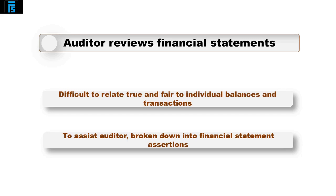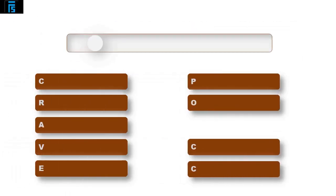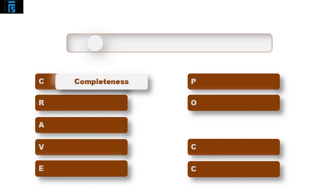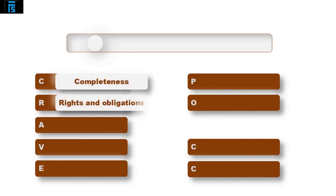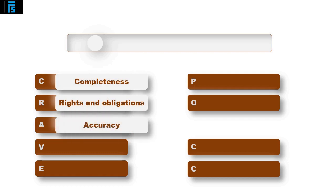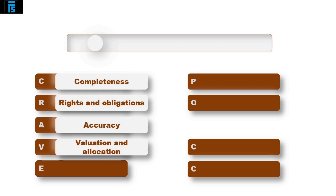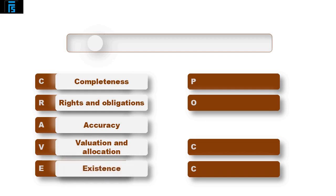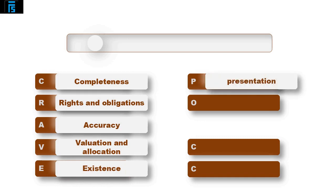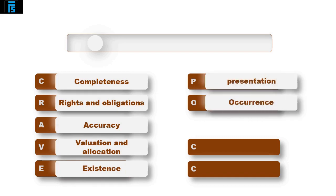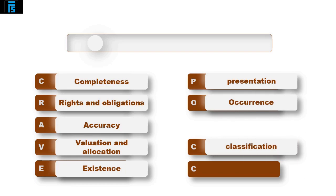These are outlined in ISA 315. To help remember the assertions, I use CRAVE POC. The C is for completeness, the R is for rights and obligations, the A is for accuracy, the V is for valuation and allocation, and the E is for existence. Then the P is for presentation, the O is for occurrence, the C is for classification, and the final C is for cutoff.